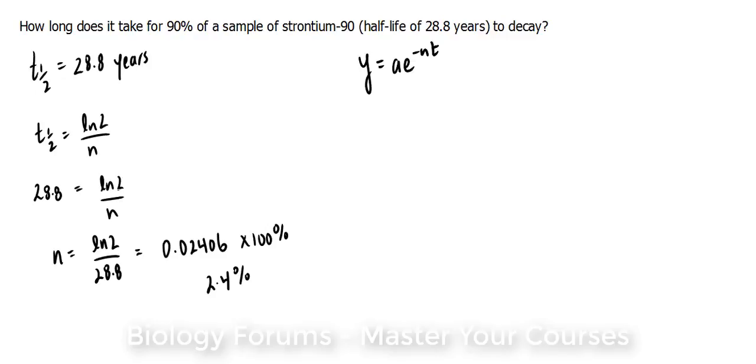We know that at the end of this time that we're looking for, only 10% of the original will remain. So our y value will actually be 0.1 of the original a, which we don't know. We can replace this value into our formula, which gives us 0.1·a is equal to a·e to the power of negative 0.02406·t. We want to be as accurate as possible.